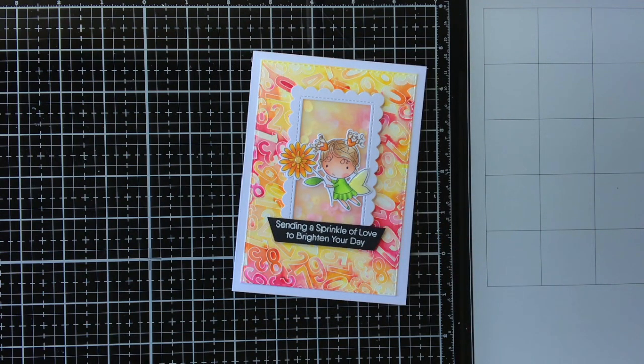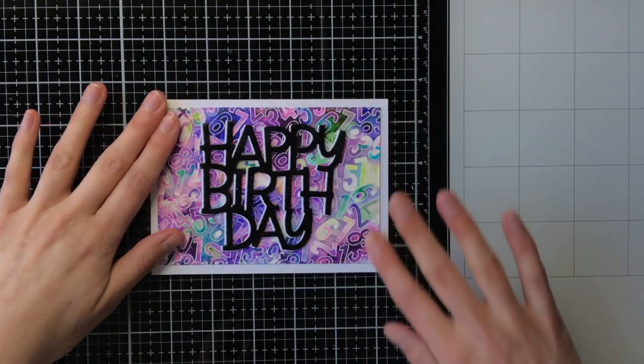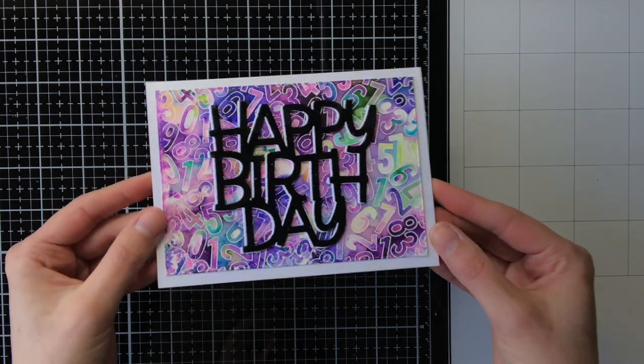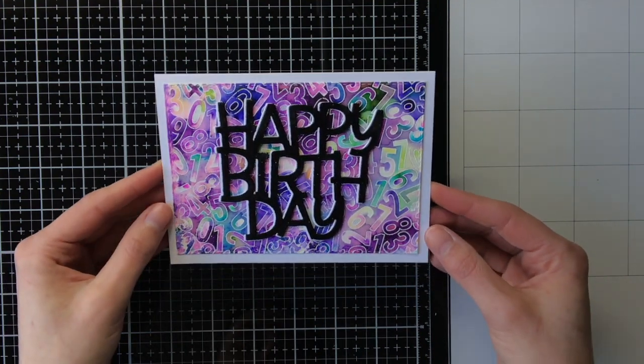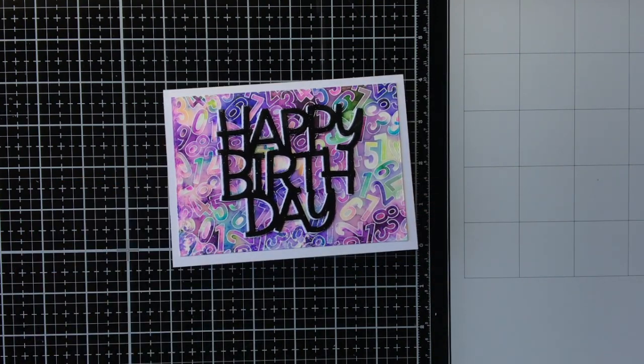For the second card I also used the number jumble background, but the night sky one. I kept this card really simple by just adding the big happy birthday die from Mama Elephant on top. I did heat emboss the happy birthday with some clear embossing powder, and I did that twice to get a nice shine to the happy birthday sentiment.